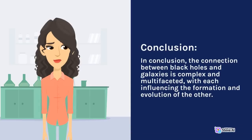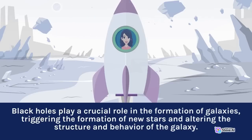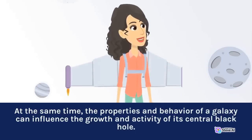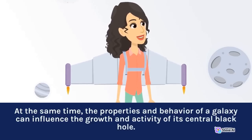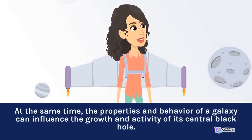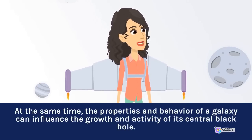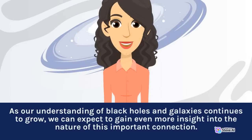In conclusion, the connection between black holes and galaxies is complex and multifaceted, with each influencing the formation and evolution of the other. Black holes play a crucial role in the formation of galaxies, triggering the formation of new stars and altering the structure and behavior of the galaxy. At the same time, the properties and behavior of a galaxy can influence the growth and activity of its central black hole. As our understanding of black holes and galaxies continues to grow, we can expect to gain even more insight into the nature of this important connection.